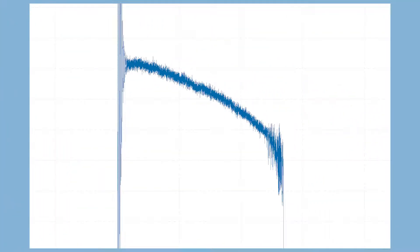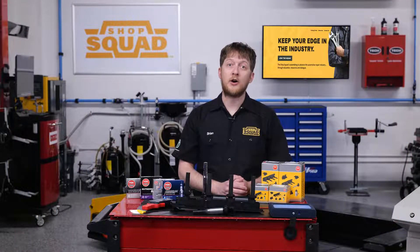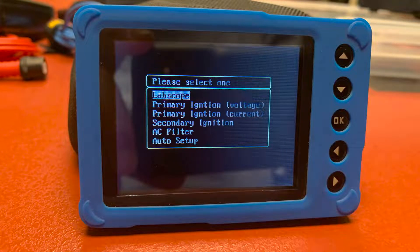On most scopes, the trigger should be set to auto or single with an increasing slope. With some scopes, you will be able to use an auto or repeat trigger setting to stabilize the waveform. There are also options to offset or delay the trigger to fit the entire event on one screen.